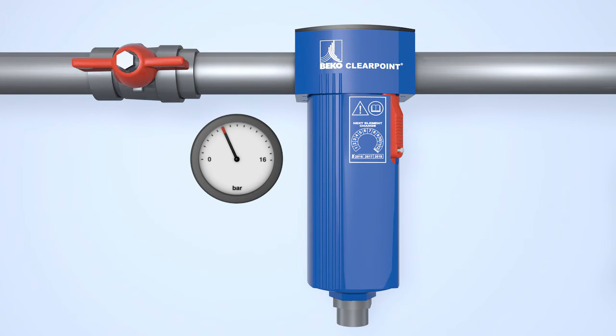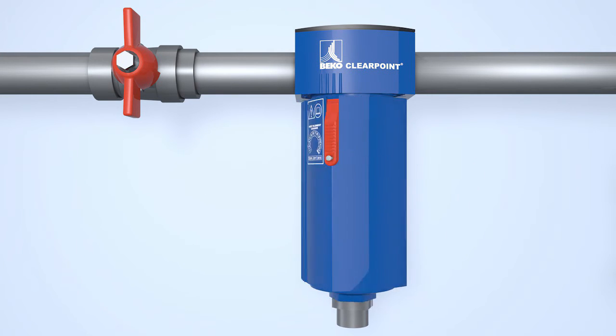Once the compressed air supply has been shut off, the lower filter housing can be removed by turning the filter head.